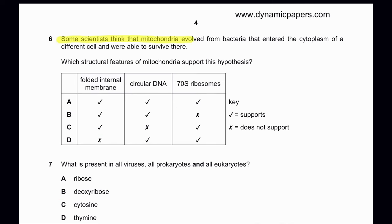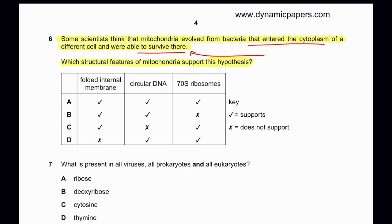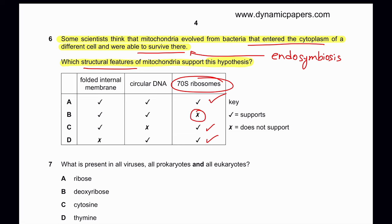Question 6: Some students think that mitochondria evolved from bacteria that entered the cytoplasm of a different cell and survived there. Which structural features of mitochondria support this hypothesis? This is known as endosymbiosis or the endosymbiont theory. One main structural feature supporting this is that mitochondria contain 70S ribosomes — bacteria also have 70S ribosomes. So the possible options are A, C, and D; B is already eliminated.